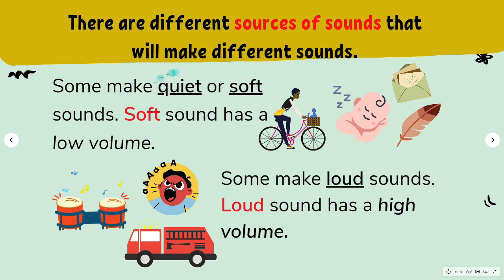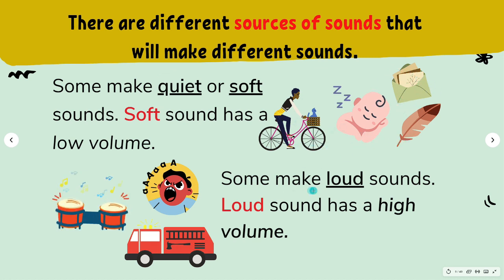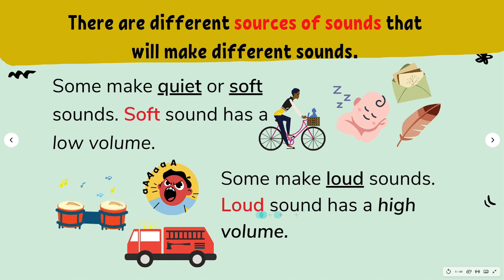Some sources make quiet or soft sounds — these have low volume. Some make loud sounds, like double drums, shouting, and a fire truck. Loud sound has a high volume.